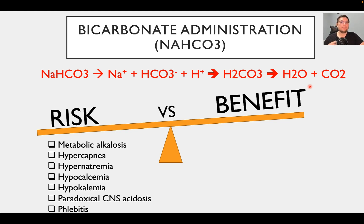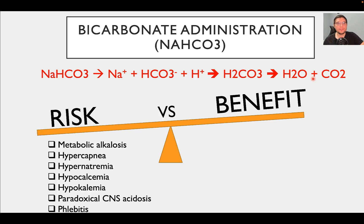It can also cause paradoxical CNS acidosis. What happens is that when you give bicarbonate, it will eventually dissociate into water and CO2. CO2 will easily cross the blood-brain barrier, and accumulation of CO2 may cause acidosis. We call this paradoxical CNS acidosis. There will also be a portion of bicarbonate in the form of HCO3, but this form will not be able to cross the blood-brain barrier easily.